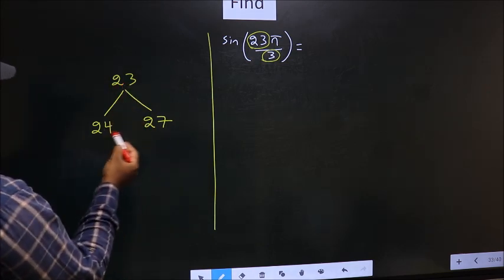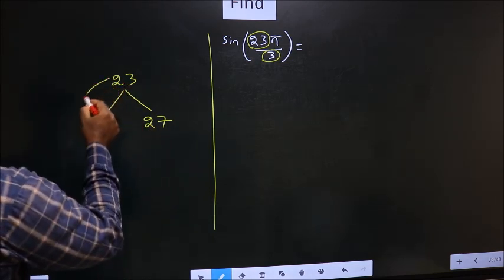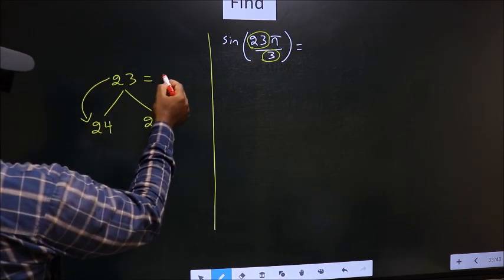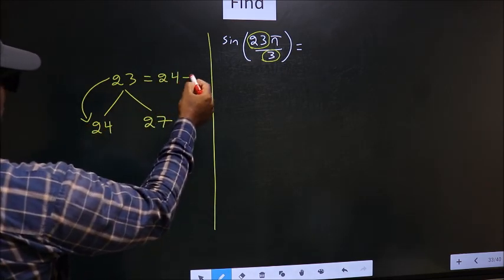23 is close to which multiple? It is close to 24. So now 23 should be written as 24 minus 1.